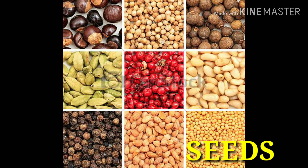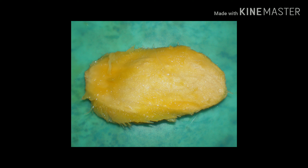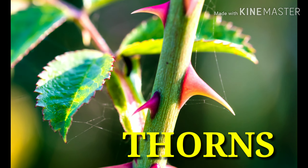Then the teacher should talk about seeds. Seeds come in many kinds with different colors and sizes. Some are tiny, like rice and wheat seeds, and some are big, like the mango seed. The seed has a baby plant inside it.